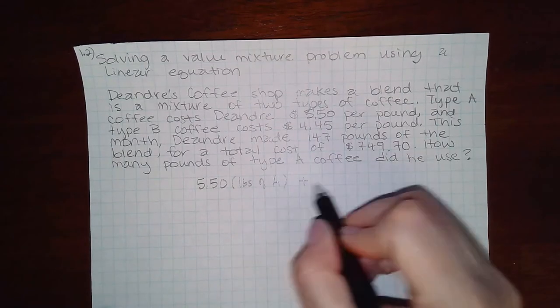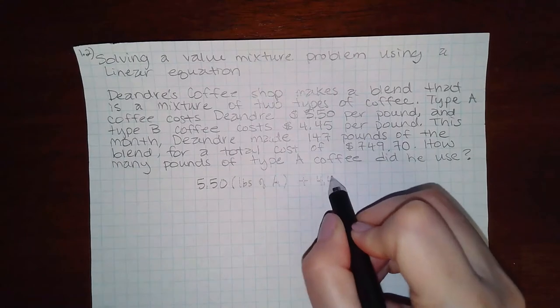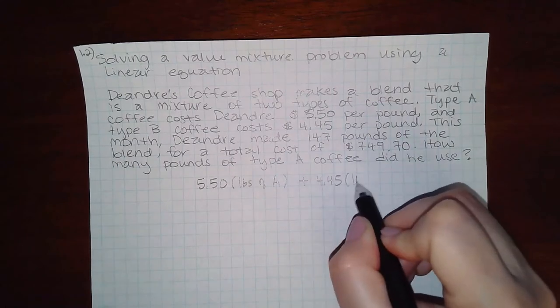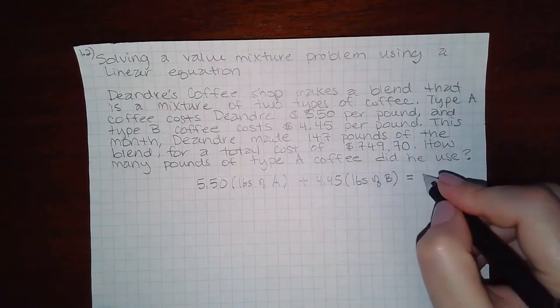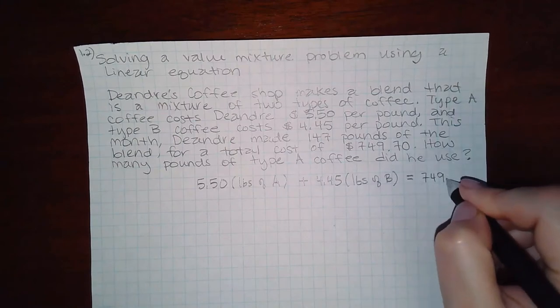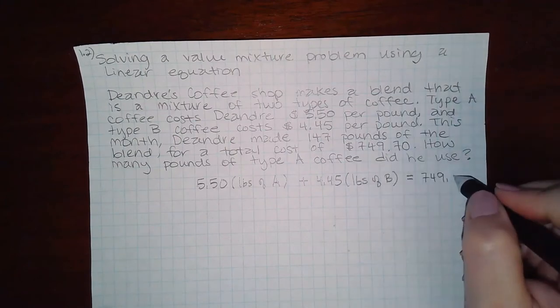plus it would be $4.45 times the number of pounds of type B. And that would equal our total of $749.70.